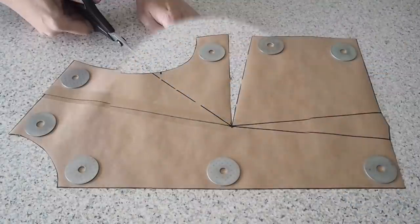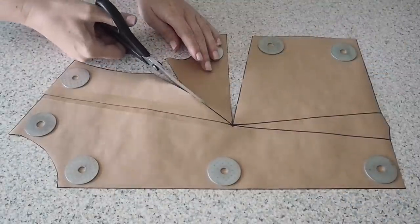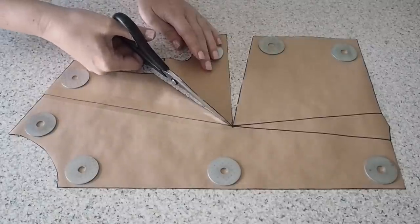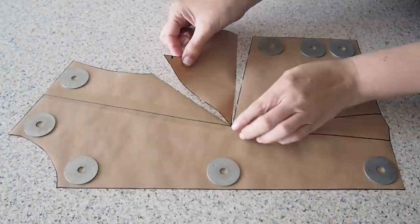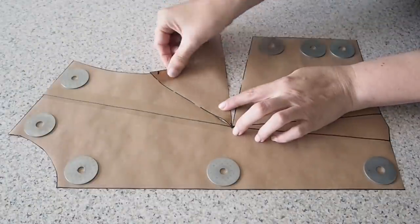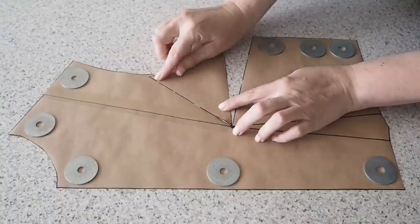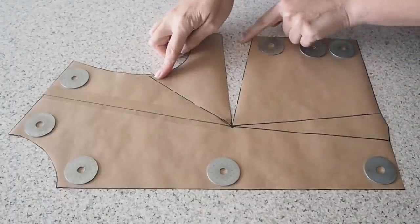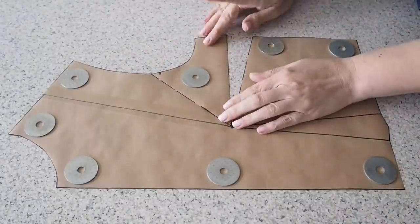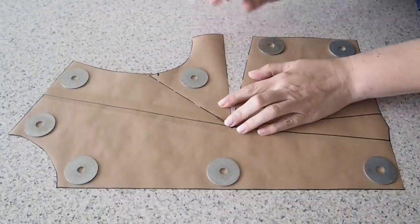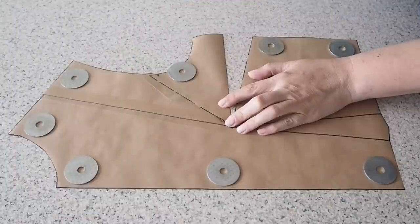And then overlap one side over the other by about five millimeters or so. And you'll see here that overlap opens up that side seam dart a little bit more. So making sure everything's laying nice and flat and sticking everything down.